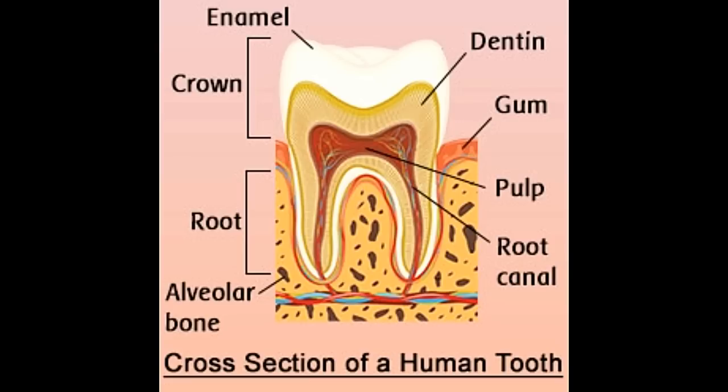Milk teeth, which are also called deciduous teeth, are the first set of 20 temporary teeth that start appearing between the age of 6 to 10 months. These erupt by the age of 3 years and are shed by 12 years. The spaces left behind by the milk teeth are filled by permanent adult teeth.